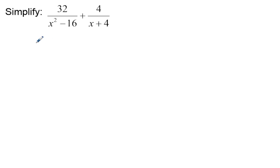So what I'd like to do to start is see if there's anything in the numerator or denominator that will factor. If I look at 32 over x squared minus 16, x squared minus 16 is the difference of squares, so this would be x plus 4 and x minus 4.